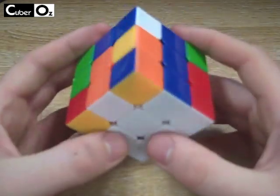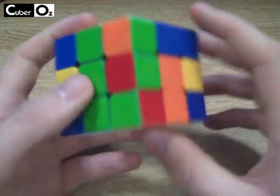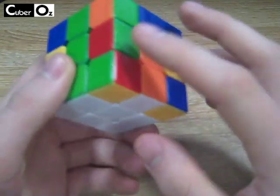So there's our cross. Now, the first part of the advanced method that's different from the beginner's method is the stage we'll be looking at today and that's the F2L.